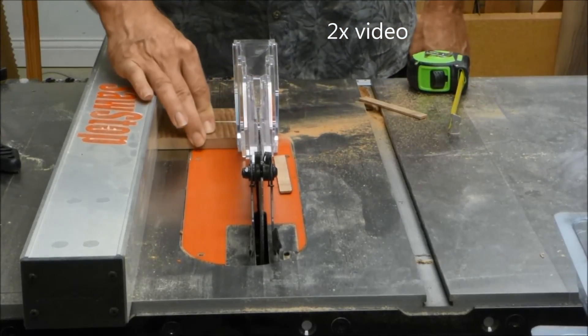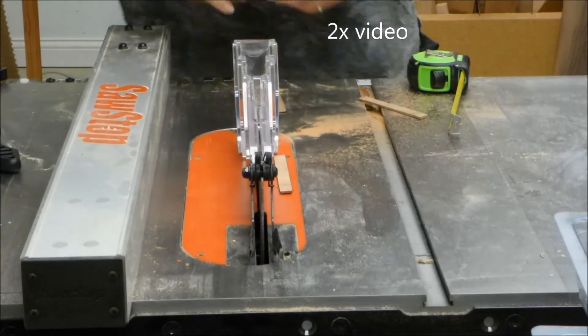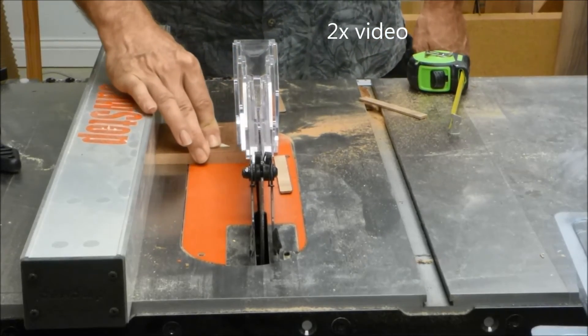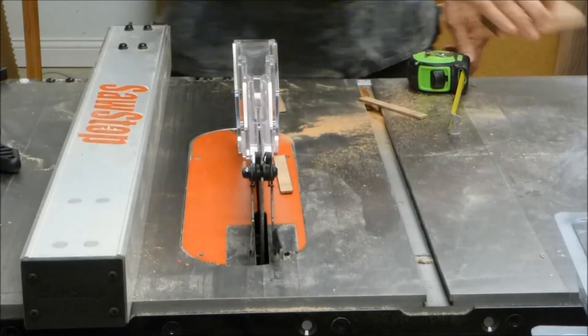Now we're going to trim to final size. As I mentioned we started with our substrate wood about a half inch oversize, and I'm trimming that down on the table saw. That's all. Clean up the edges.